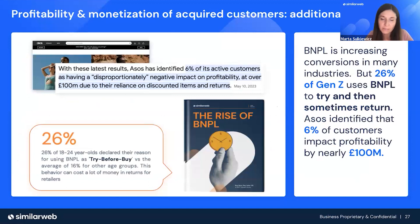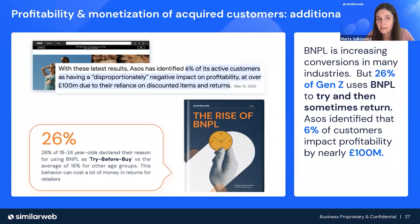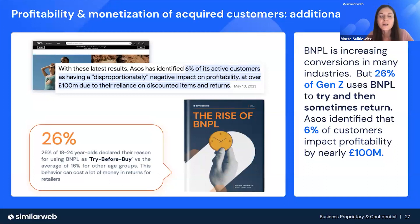From a report we published a couple of months ago, we know that 26% of 18 to 24 year-olds declared that their main reason to use BNPL is to try before they buy — much higher than any other age group. When Asos recently reported their financial results, they claimed they identified 6% of their active customers with a negative impact on profitability, summing to 100 million British pounds. This was the cost of 6% of customers using a lot of BNPL together with the free return option.